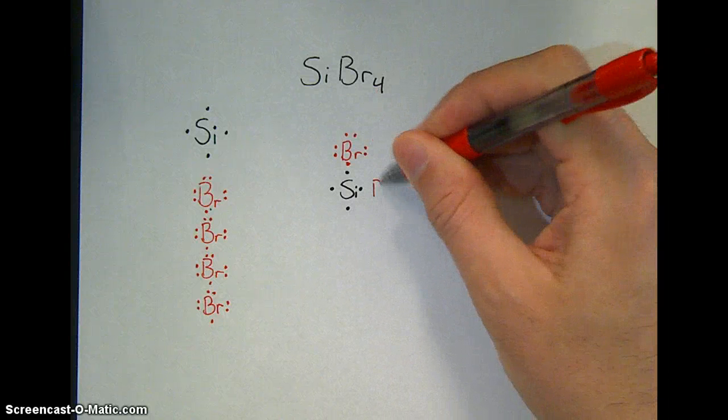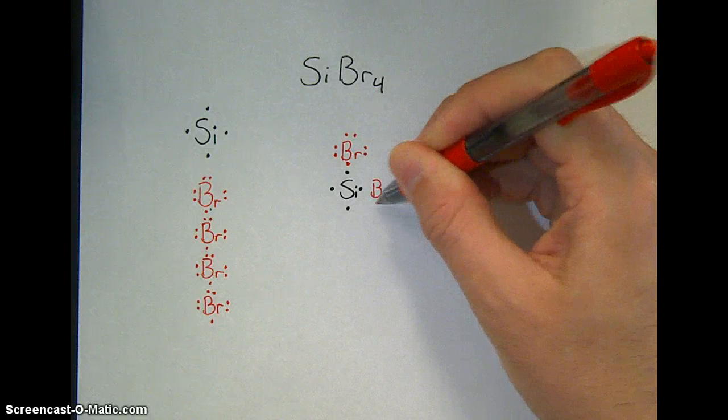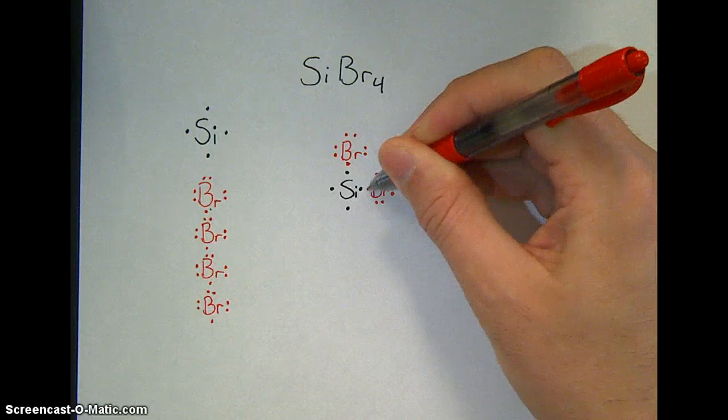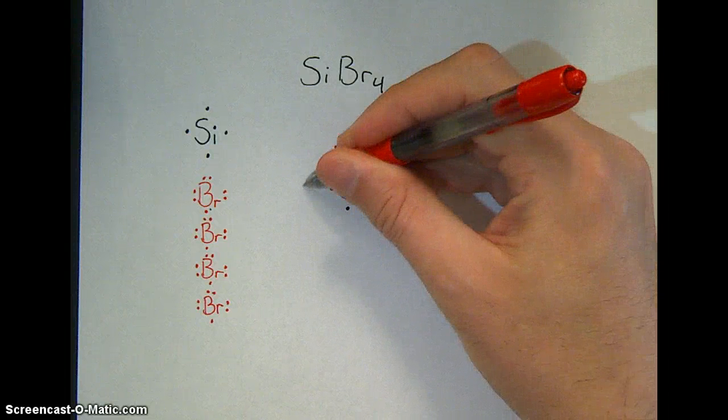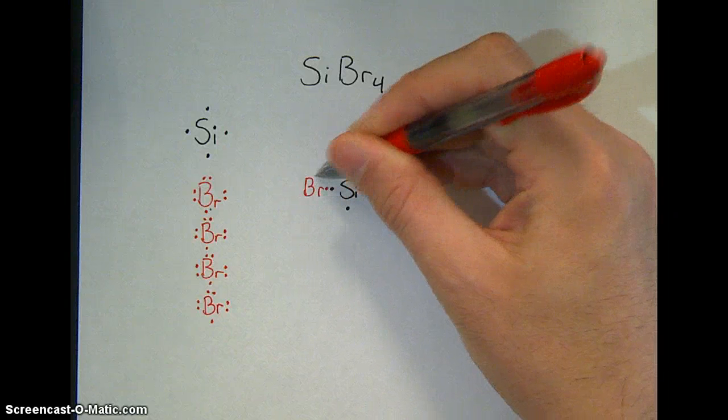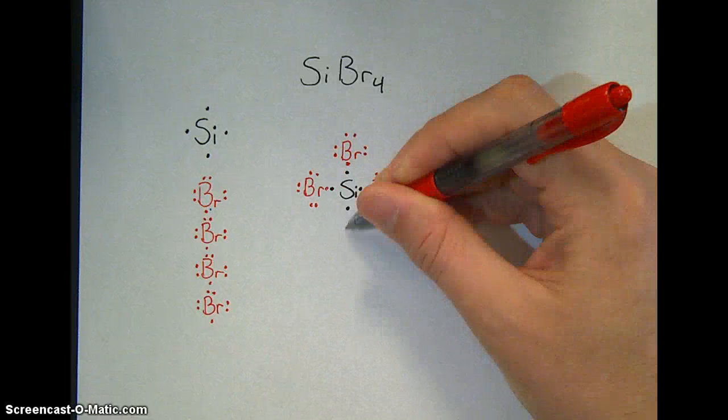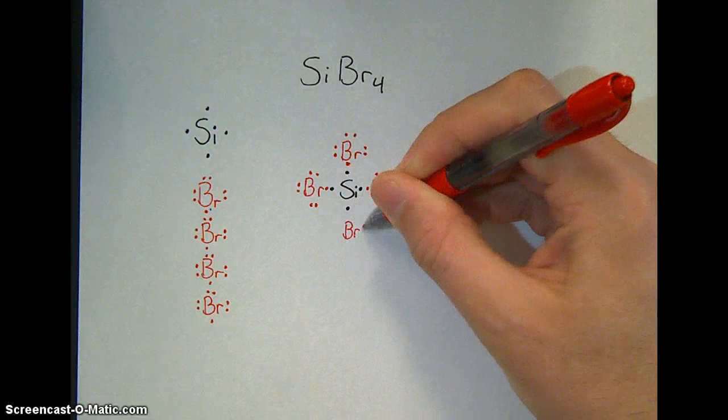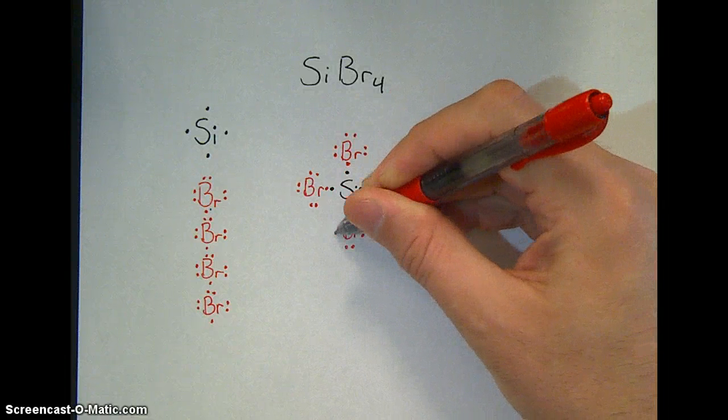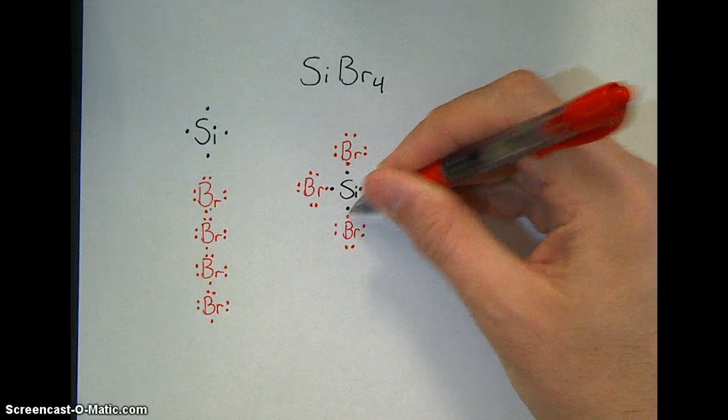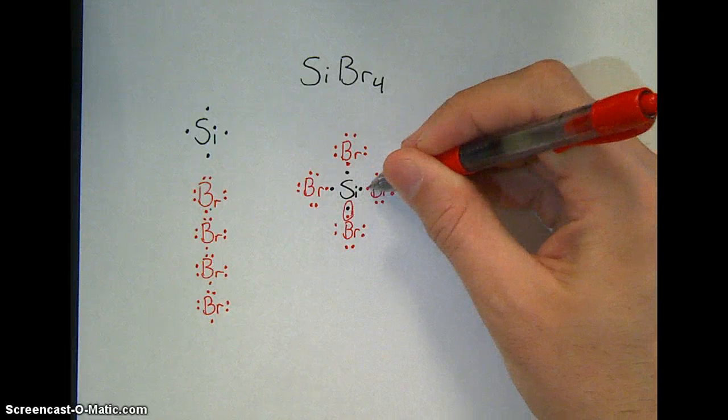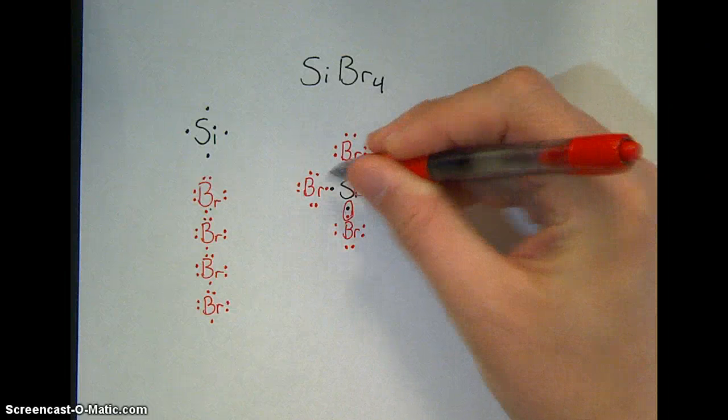Same thing's true about a bromine on this side. With its seven electrons, sharing its single pair. A bromine here, sharing its single pair. One here, sharing its seven electrons. Right here. And that gives me four bonds connected to the silicon.